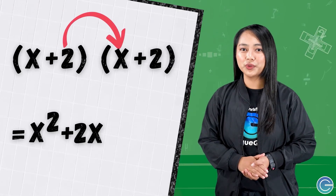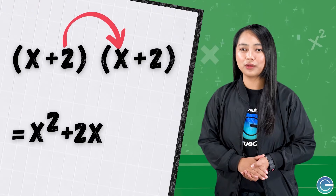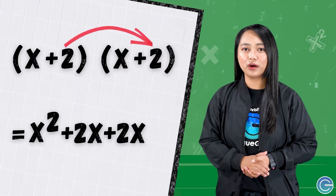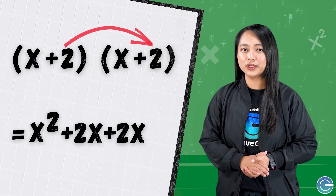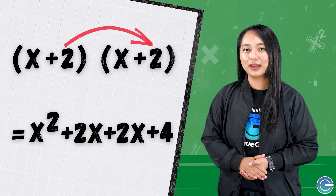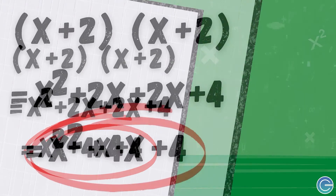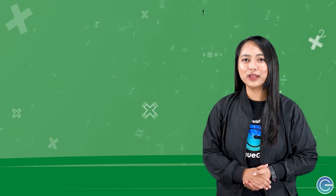The next letter in FOIL is I, so you'll multiply the inner terms of the polynomials together — that's the 2 from the first binomial and the x from the second binomial, giving you 2x. Note that if you're squaring a polynomial, the O and I terms of FOIL will always be the same. The last letter in FOIL is L, which stands for multiplying the last terms of the binomials together: the 2 from the first binomial and the 2 from the second binomial, which gives you 4. Add all the FOIL terms together and the result will be the square of the binomial.